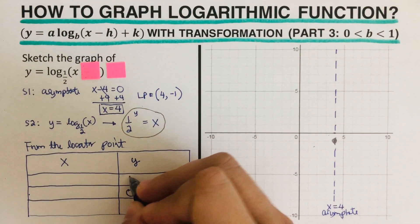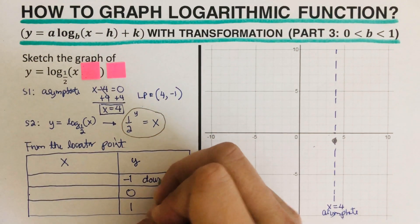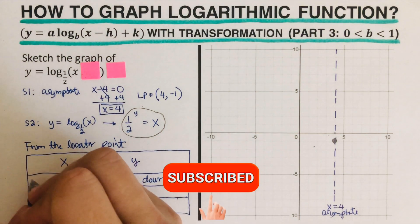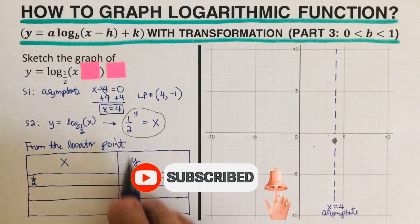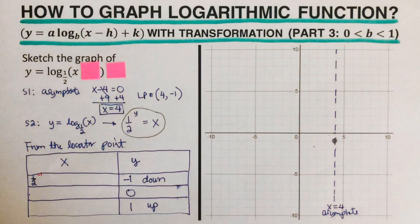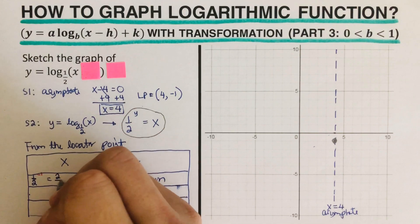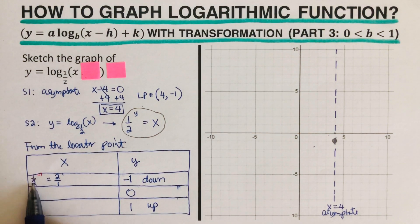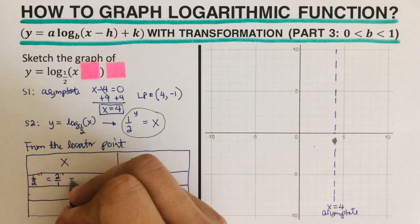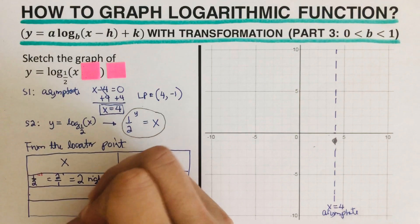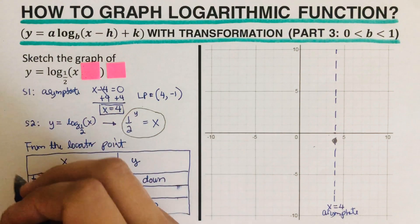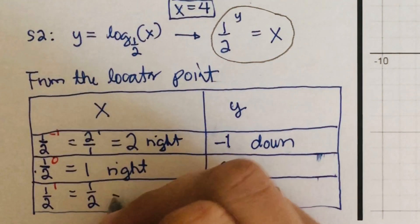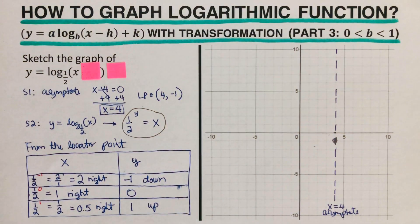To set up the y values — since our a here is one, I go ahead and write zero, negative one, and positive one, which means this is going down. We plug these into the equation. One half raised to the power negative one — when we have a negative exponent we flip the position, so that comes out two over one, which is two. That means this point goes to the right. Then we plug in zero and one as well.